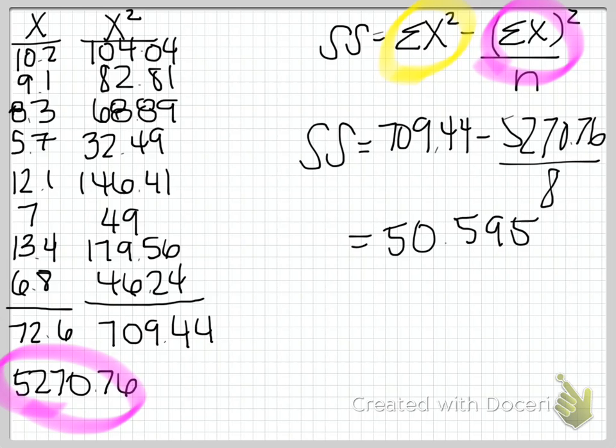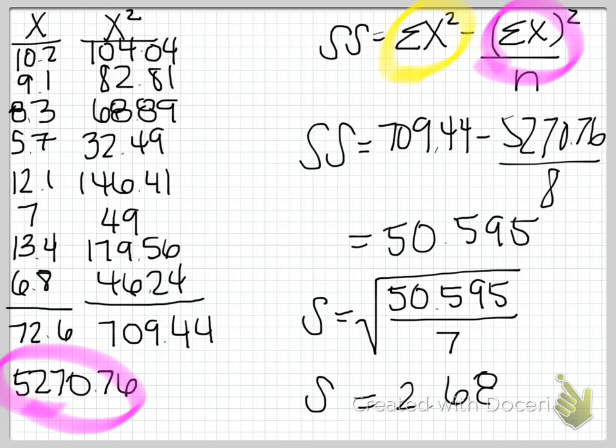We have our sum of squares, but we really want our standard deviation. So remember that our standard deviation is going to equal the square root of our sum of squares, which we just figured out, divided by n minus 1. So in this case, we are going to divide it by 7. And that gives us a standard deviation of 2.688. So in this particular sample, which we hope represents the population, we have a standard deviation of 2.688. So that's one of the numbers that we're going to need to figure out this particular problem. So let's go ahead and grab a new page and keep working.